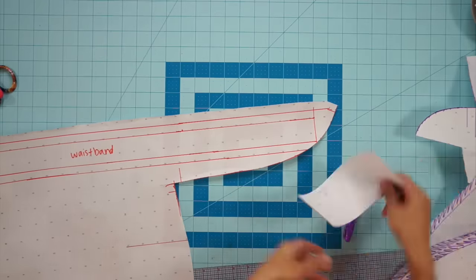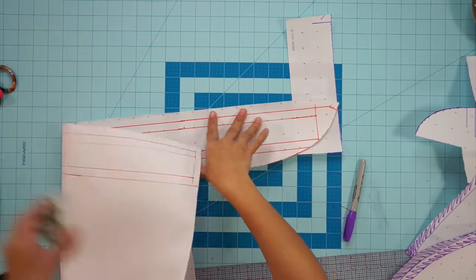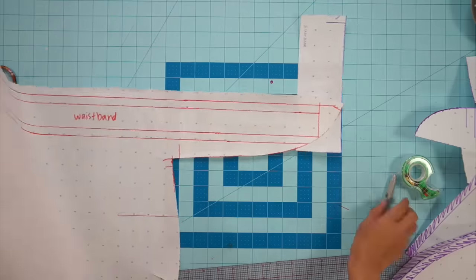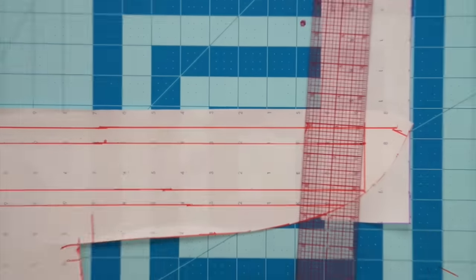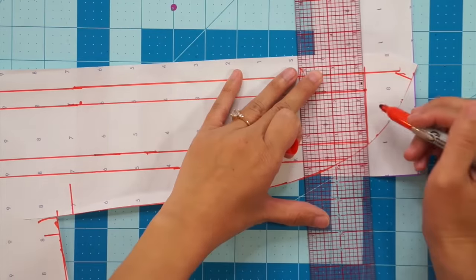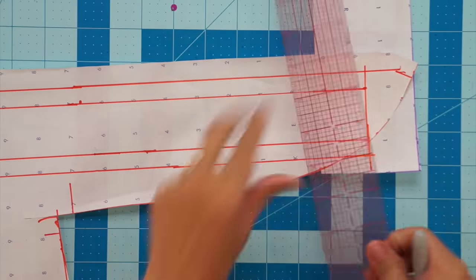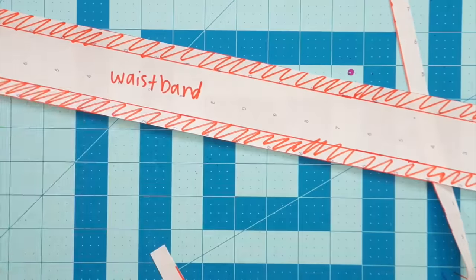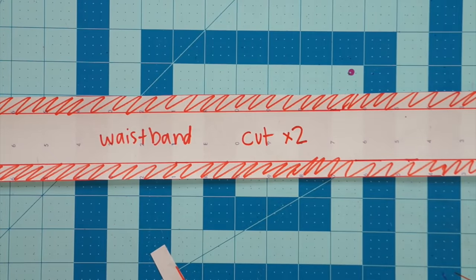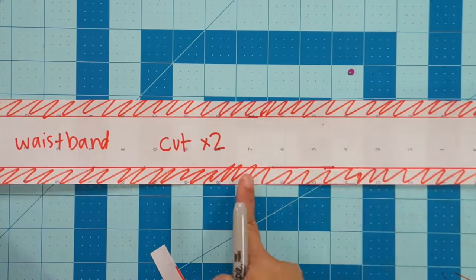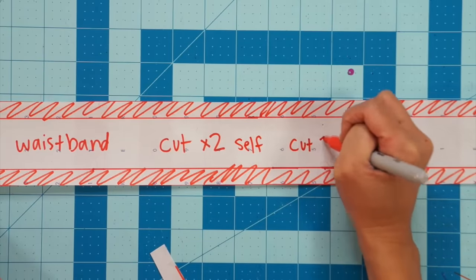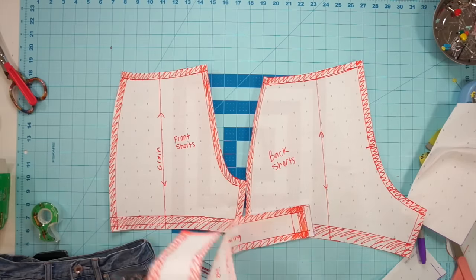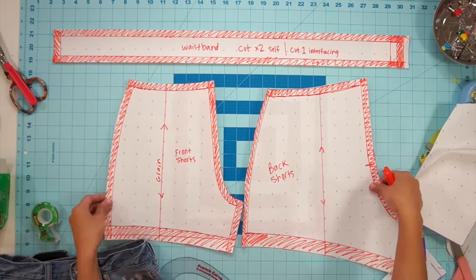We actually don't need to use tape that much yet until we start altering the pieces, but if I need a little more space on my paper I'll tape some scrap paper underneath so I have more to work with. It's helpful to label how many pieces you need to cut on your patterns. You can put cut two or cut on fold or cut one lining and one interfacing. It all depends on what your design calls for. And there you have it.